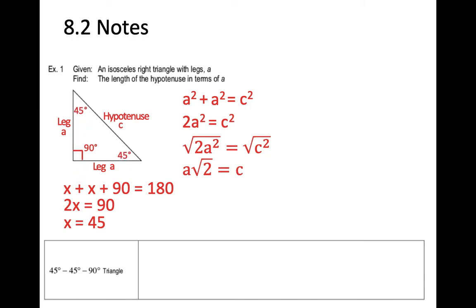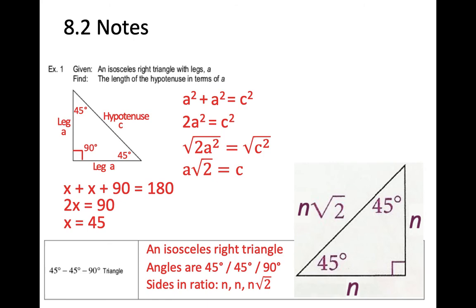In our notes, a 45-45-90 triangle is an isosceles right triangle with angles 45-45-90. The sides are in the ratio of N, N, and N root 2. Each leg equals N, and the hypotenuse is root 2 times that. Root 2 is about 1.4, so if each leg is 10, the hypotenuse would be about 14.